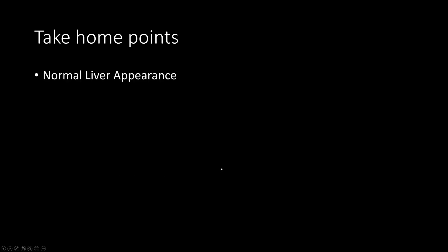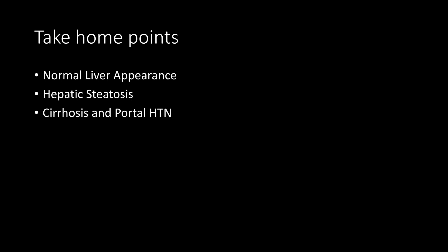That's the end of this talk. If you take only a few things away, I want it to be: one, know what normal liver looks like; two, know when you can call hepatic steatosis on CT — something to think about on every CT when you look at the liver; three, know the findings of cirrhosis and portal hypertension; and four, have an approach to a very heterogeneous mottled nutmeg liver appearance and know the three categories of causes. These are the key things you need to interpret the background liver on CT in routine clinical practice.